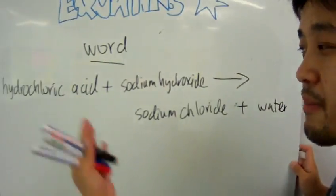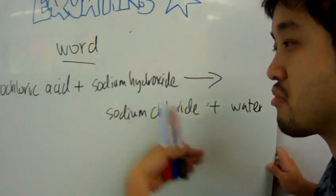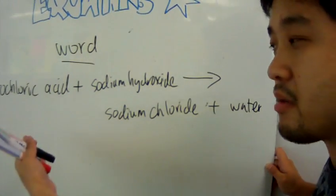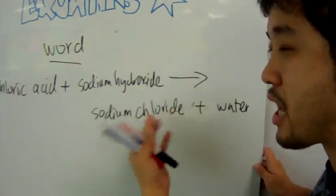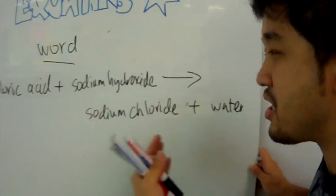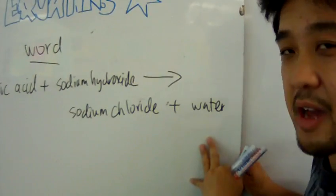Alright? Notice, what about this word equation do you see about it? What do you notice about it? Well, first of all, you've got to write long names for them, for all these stuff, all the reactants you have here, and the products you have here.